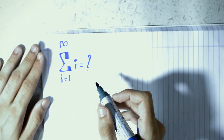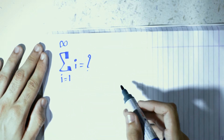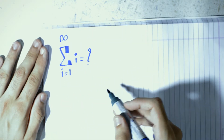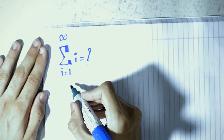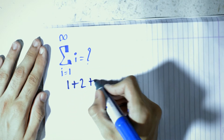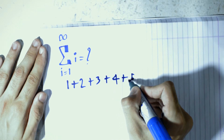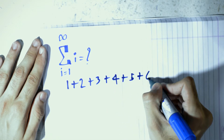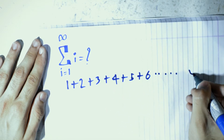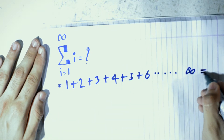Hey, what's up guys, my name is Smith Parada and today we are going to find the sum of all the natural numbers. So this is the question — I have written it down. It's 1 plus 2 plus 3 plus 4 plus 5 plus 6 and so on, all the way up to infinity. We are supposed to find the value of this thing.